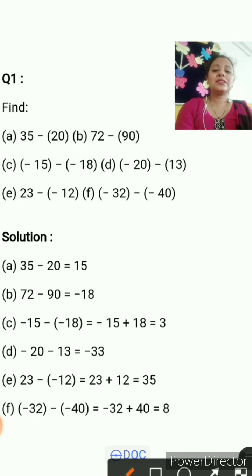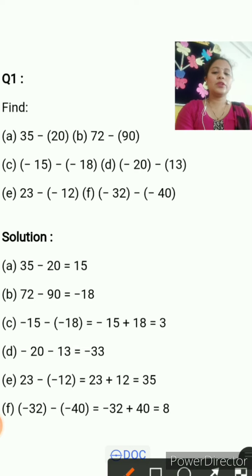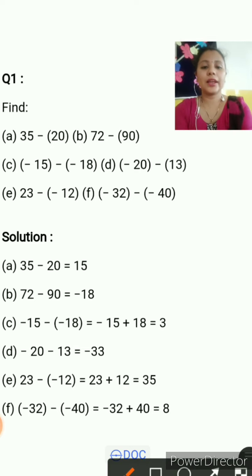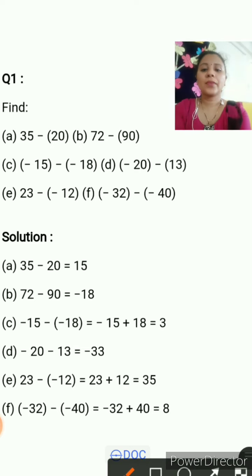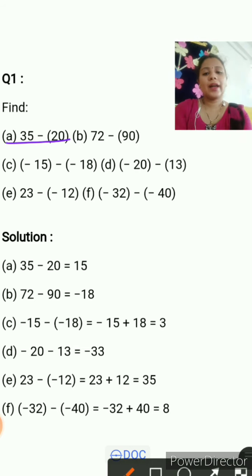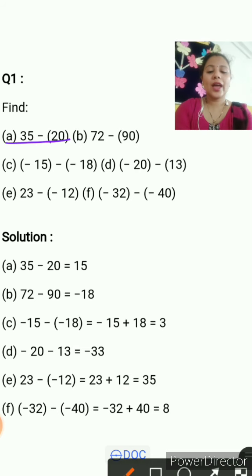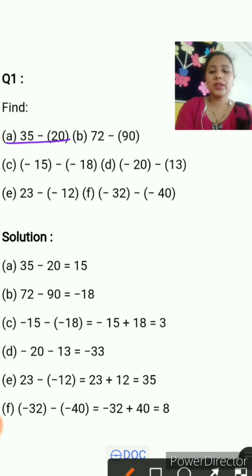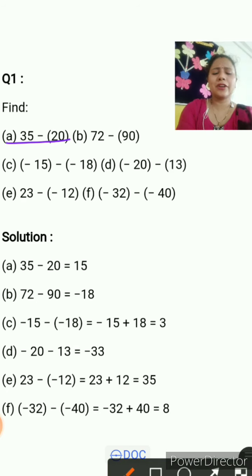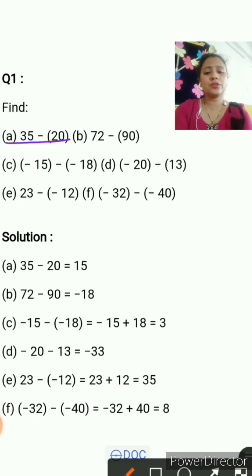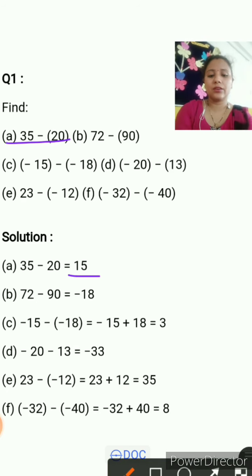So how do we subtract integers? Let's start from question number 1. Question 1 is 35 minus 20. You have to subtract 20 from 35, which is very easy — 35 minus 20 equals 15.